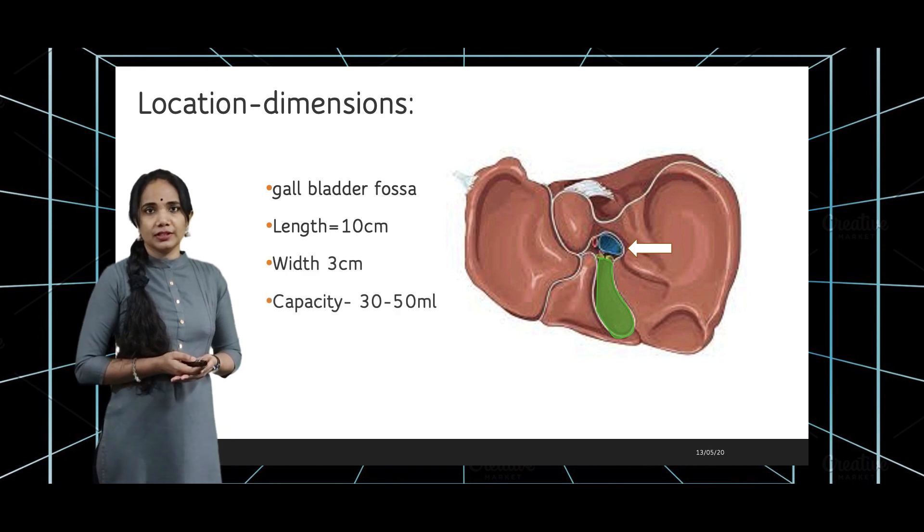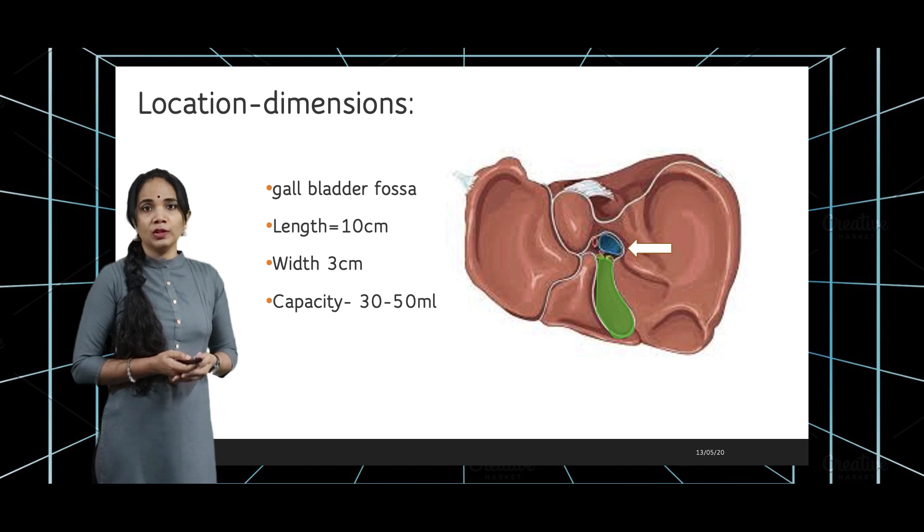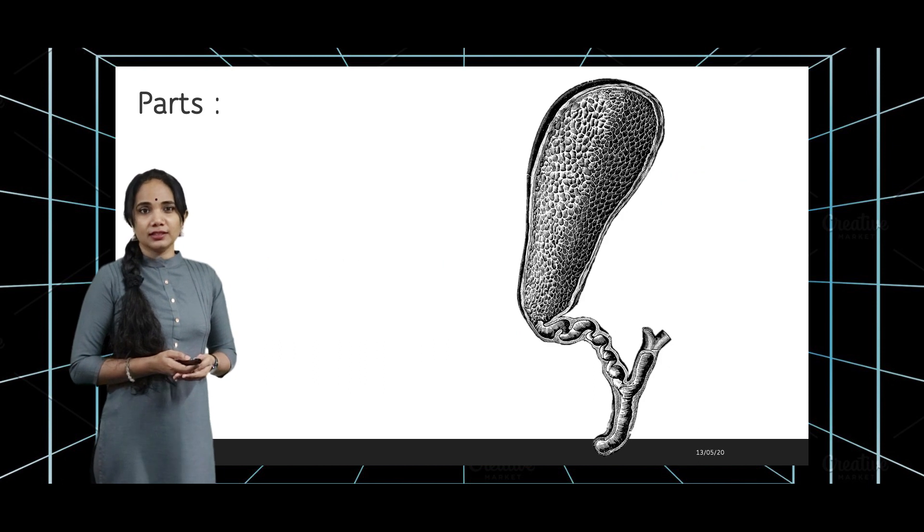The length of the gallbladder is around 10 centimeters, the width is around 3 centimeters, and it has a capacity of 30 to 50 ml.